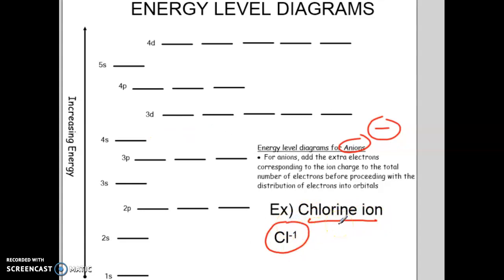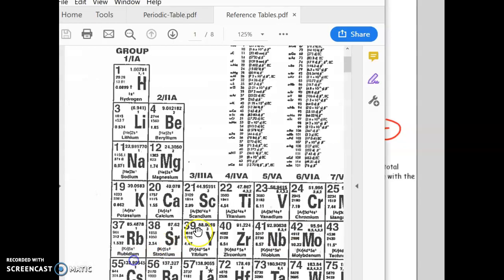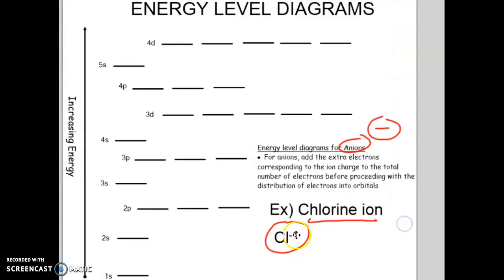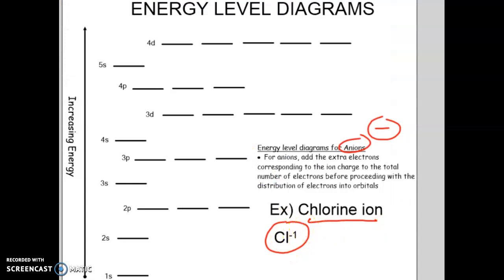So what you would do is you would essentially take your number of electrons, 17, and just add 1. So if we go back to this one, since we have an atom of chlorine, and I'll do this in a different color here, to have the ion of chlorine, it would simply be this plus an extra electron, making a full octet.